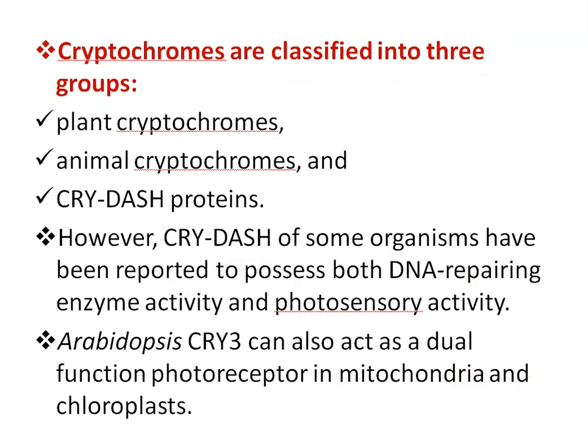Cryptochromes are probably the evolutionary descendants of DNA photolyases, which are light-activated DNA repair enzymes. Cryptochromes are classified into three groups: plant cryptochromes, animal cryptochromes, and CRY-DASH proteins. CRY-DASH proteins repair single-stranded DNA and loop structures of double-stranded DNA with equal efficiency, acting as DNA repairing enzymes. CRY-DASH proteins are also involved in light regulation during development and secondary metabolism of fungi.